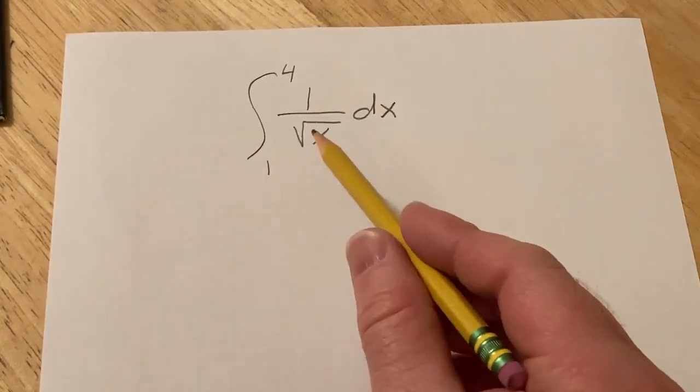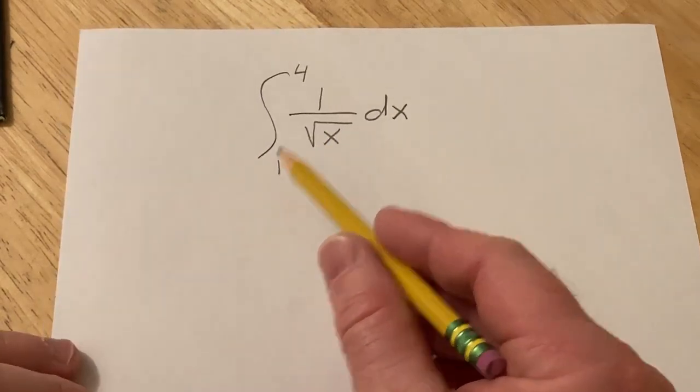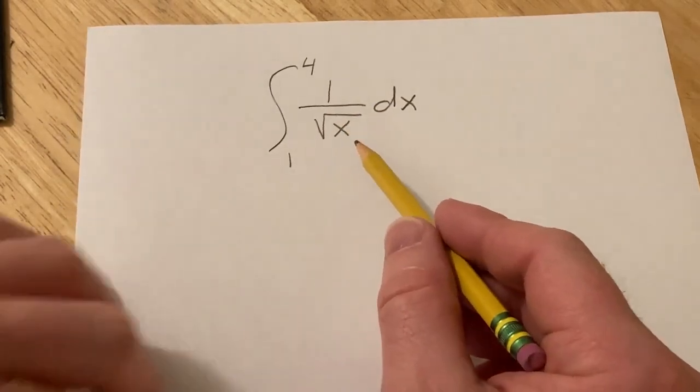Hi, in this problem we're going to work out this definite integral. So we're integrating from 1 to 4 and we have 1 over the square root of x.